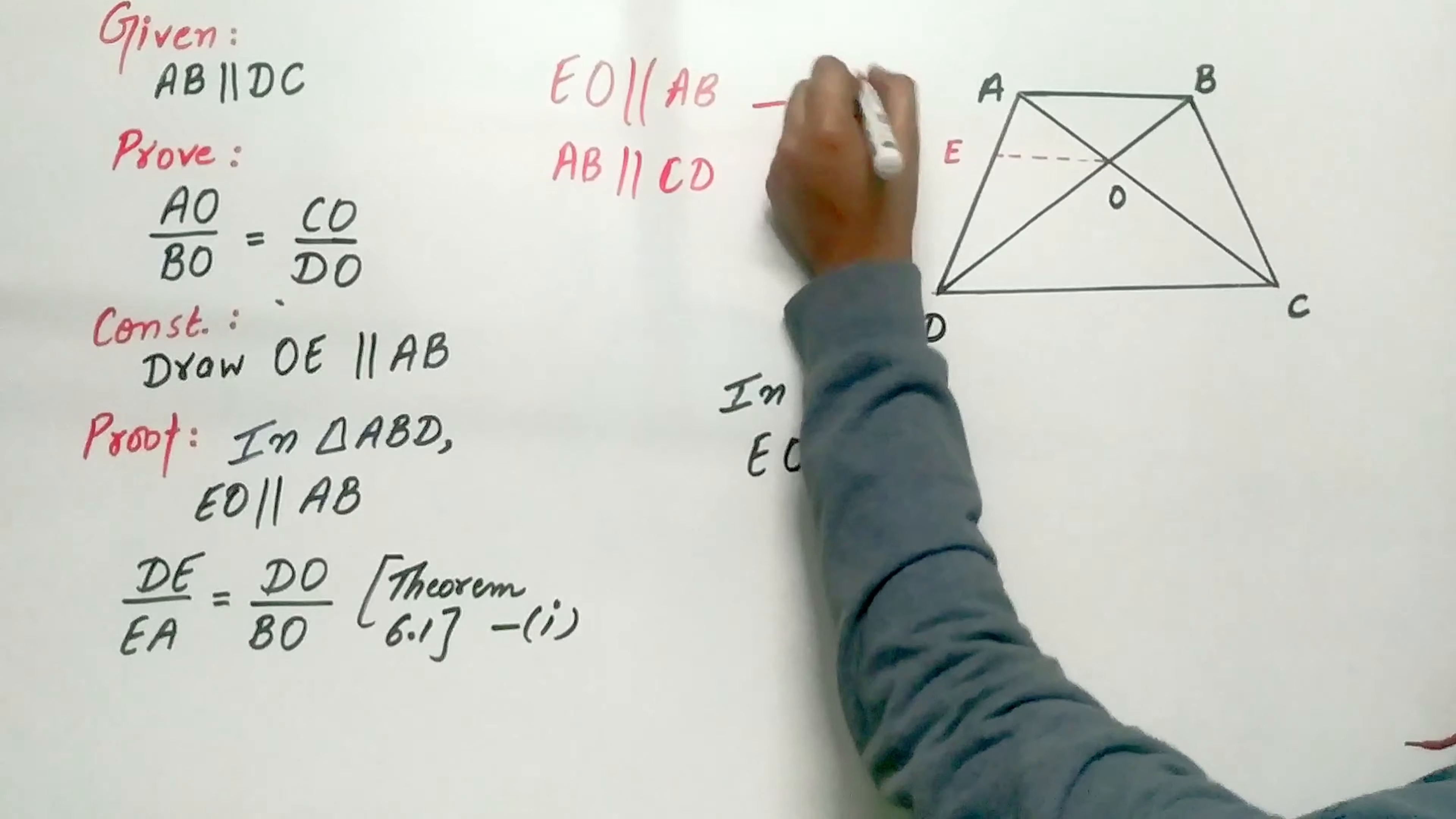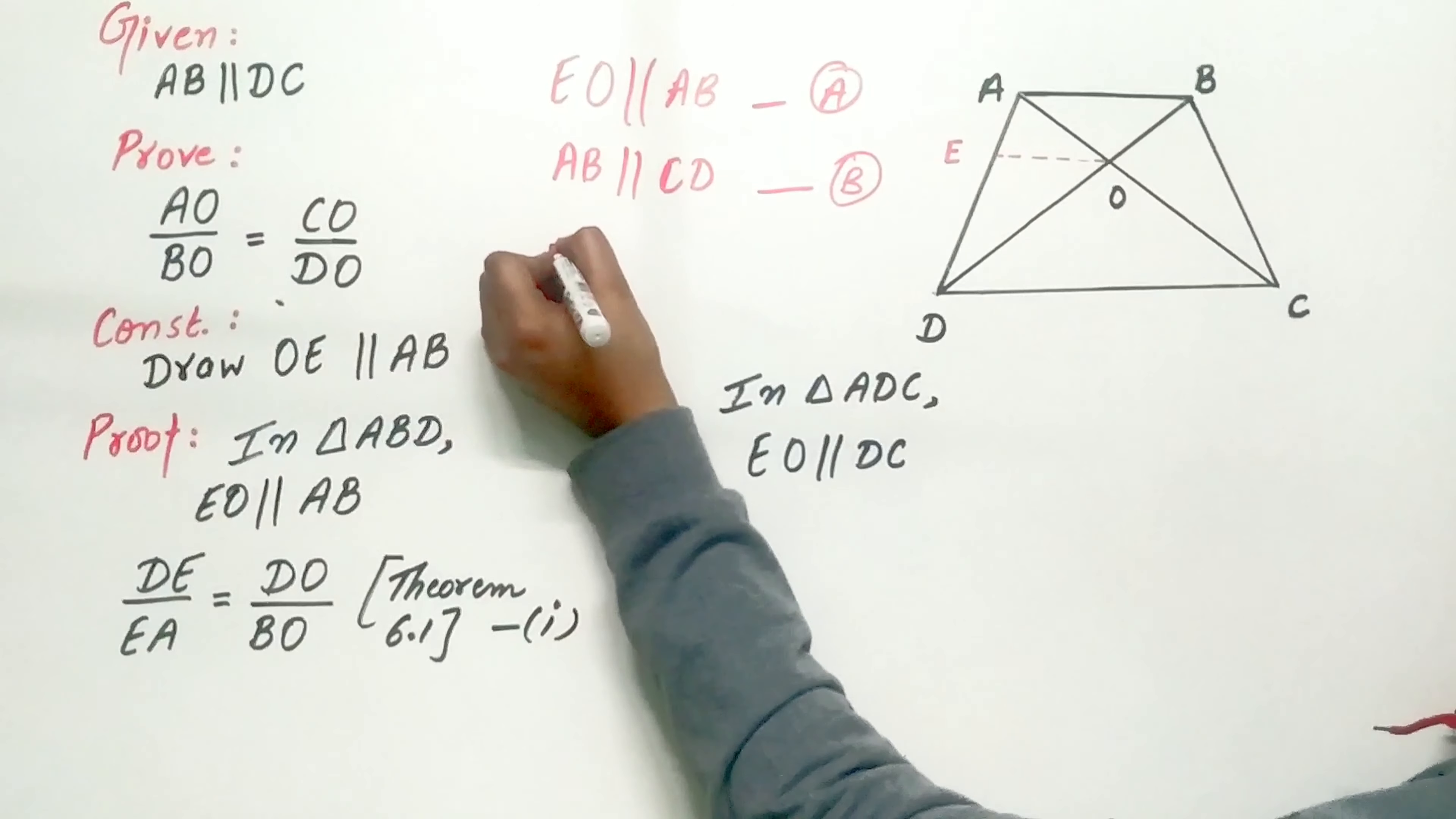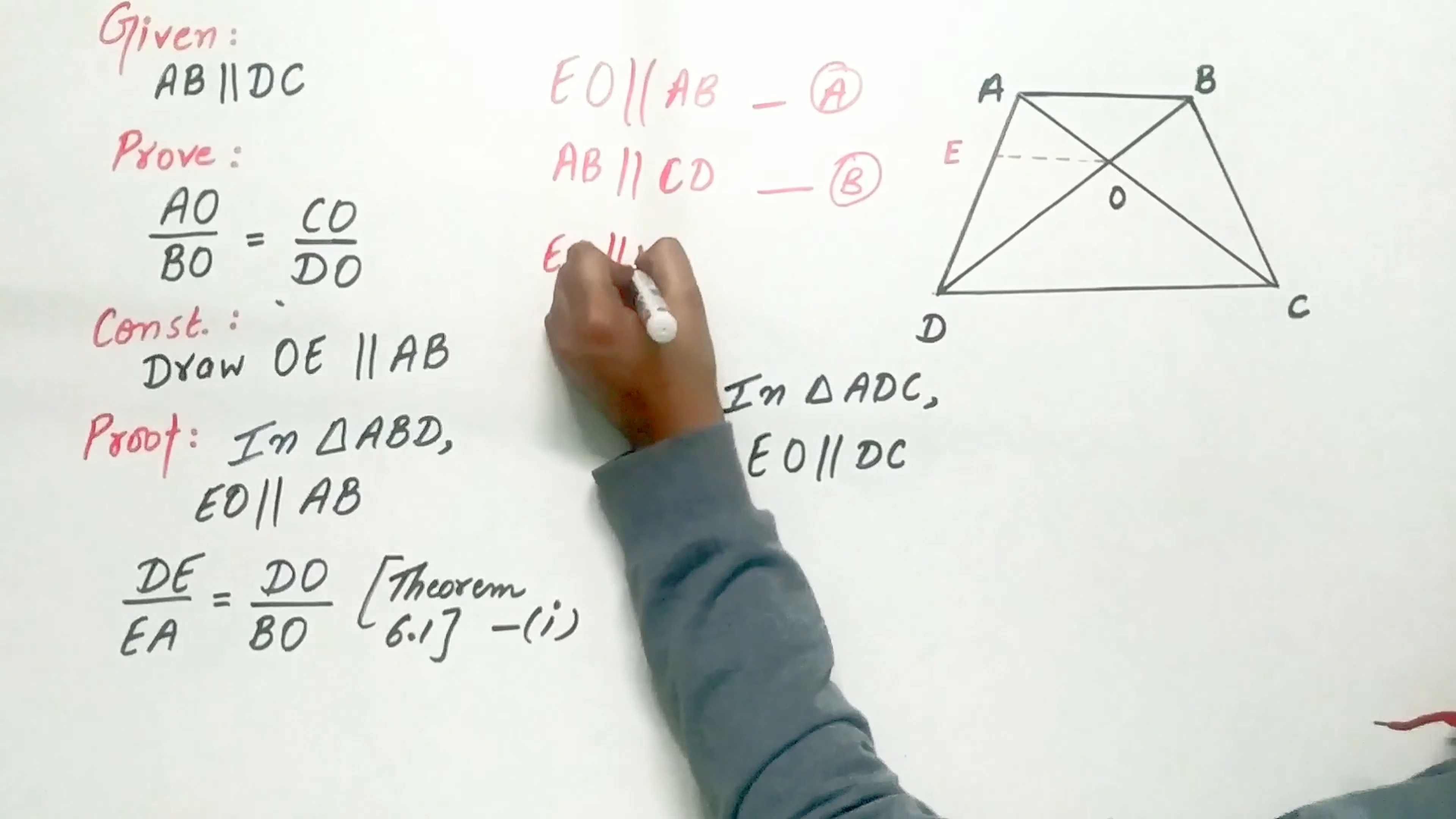So by both these equations, can I say EO is parallel to CD?